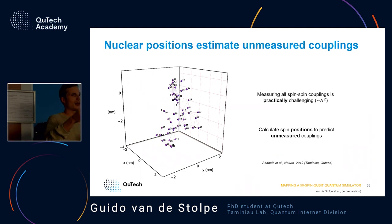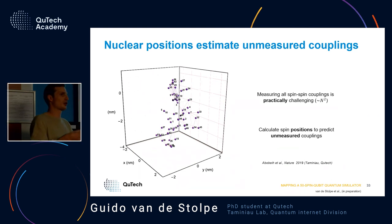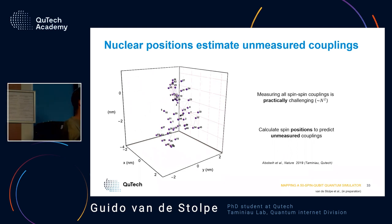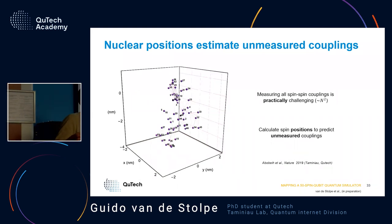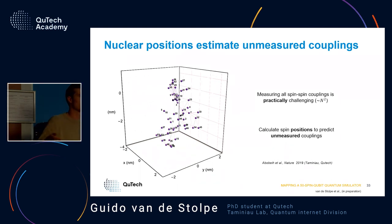We can use this spatial configuration to calculate back what would be the couplings. It's very hard for 50 spins to measure every coupling between every spin since that goes as N squared, so it makes sense to measure a limited number, figure out where these spins are, then from that configuration calculate what would be the couplings between all those spins and fill in those Hamiltonian parameters without having to measure them explicitly. In that way we can really get the 1200 couplings between all these spins.